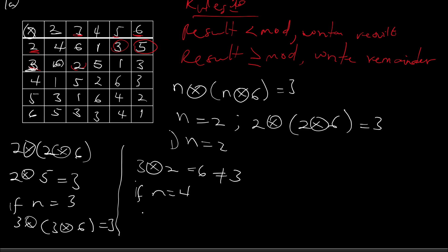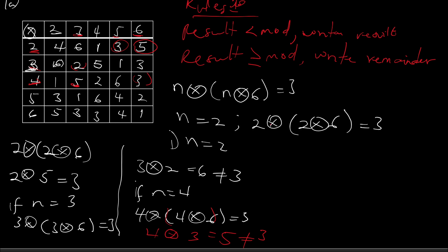Now let's pick n equals four. If n equals four, we are saying four times (four times six) should equal three. From the table, four times six is three, so this gives us four times three. Four times three is five, and five is not equal to three, so n is not four.